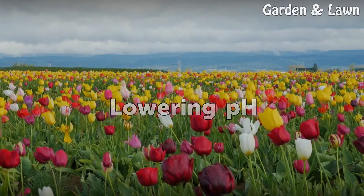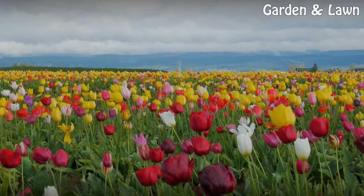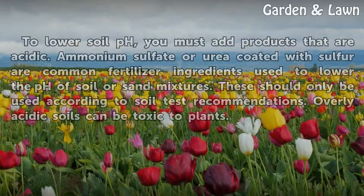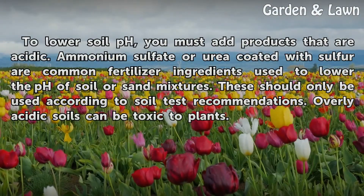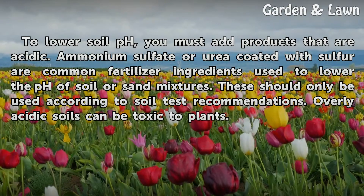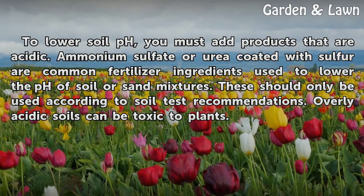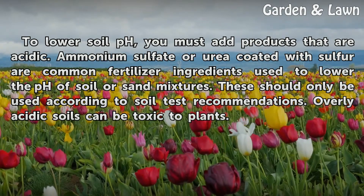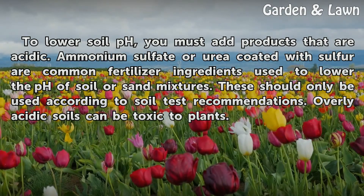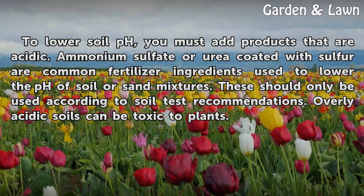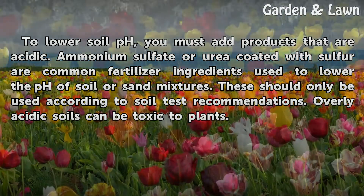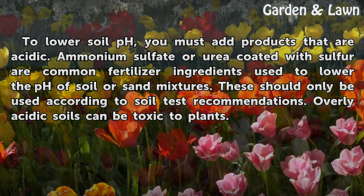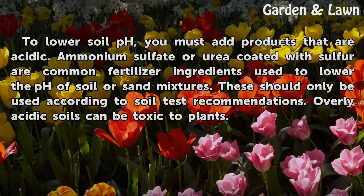Lowering pH. To lower soil pH, you must add products that are acidic. Ammonium sulfate or urea coated with sulfur are common fertilizer ingredients used to lower the pH of soil or sand mixtures. These should only be used according to soil test recommendations. Overly acidic soils can be toxic to plants.